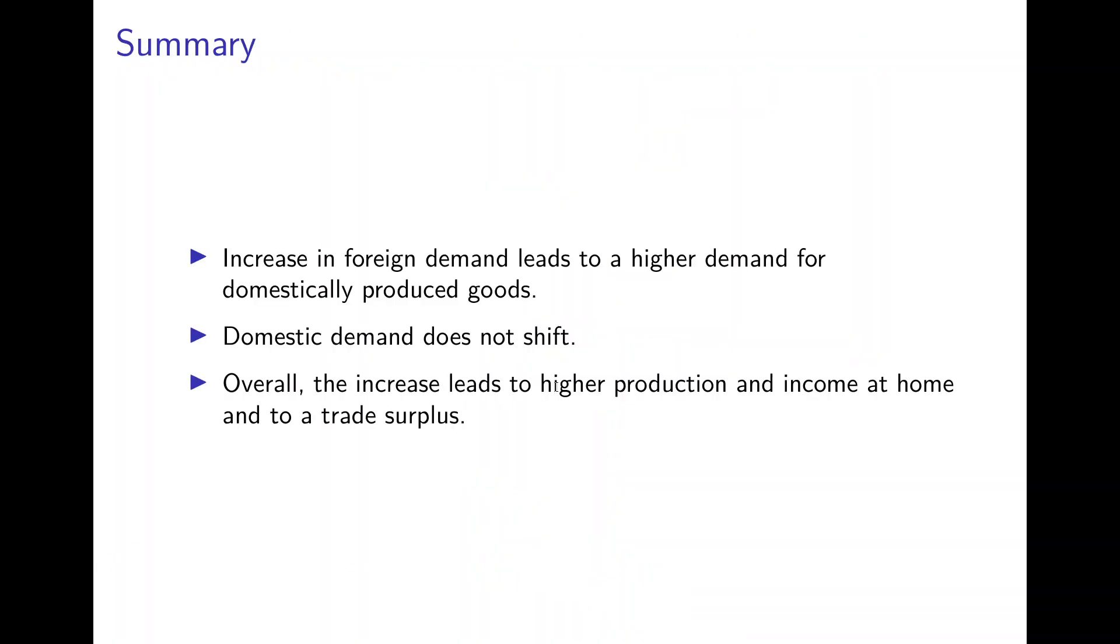So to summarize, an increase in foreign demand leads to a higher demand for domestically produced goods. The demand curve in the home economy does not shift, but there is a multiplier effect to move along the curve to a new equilibrium with higher production and higher income at home and a trade surplus.